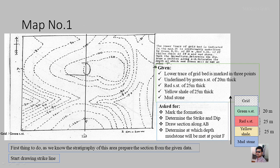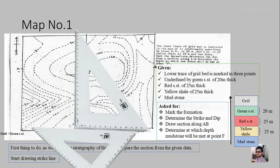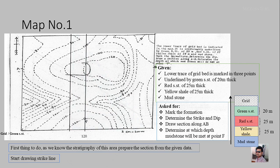The next step is to draw the second strike line. There is an outcrop crossing an elevation of 110 meters, so we draw a strike parallel to the first one that cuts the outcrop and contour at that point. We use two set squares for this: keep one set square as a base and move the other parallel to the first strike along the base. This method lets us draw parallel lines across the map without any problem.